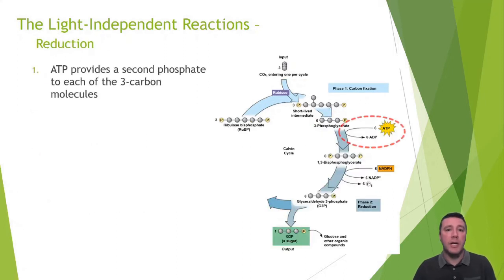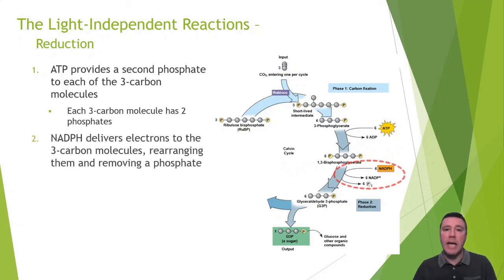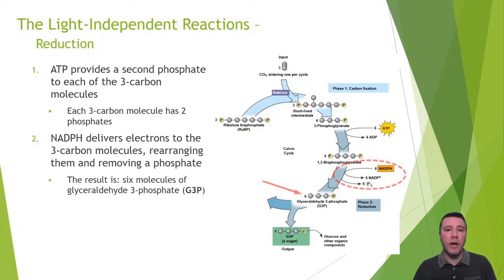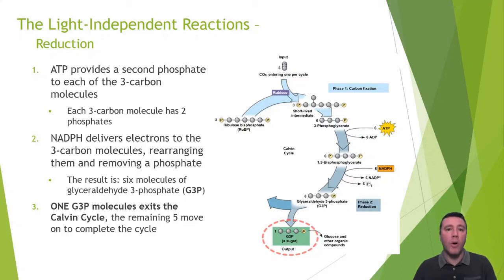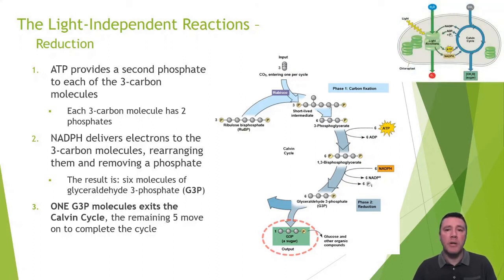In the reduction stage, ATP is broken down so that each of those three-carbon molecules can be phosphorylated again — now each has two phosphates. Next, NADPH delivers electrons to the three-carbon molecules, which are rearranged and lose a phosphate group. The result is six molecules of glyceraldehyde-3-phosphate, or G3P. One of the G3P molecules exits the Calvin cycle, while the remaining five move on to complete it. The now-oxidized NADP+ molecules, as well as the ADPs and free phosphates, will return to the light reactions to be reconstructed and sent back to the Calvin cycle.